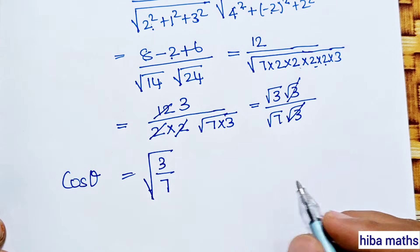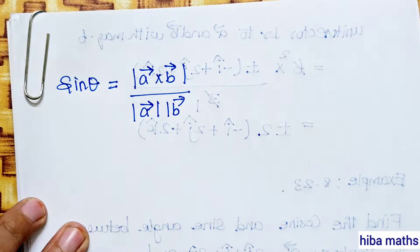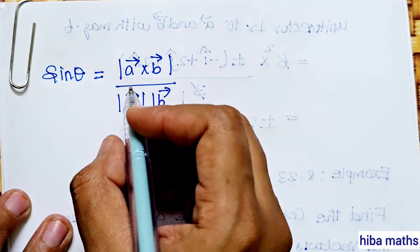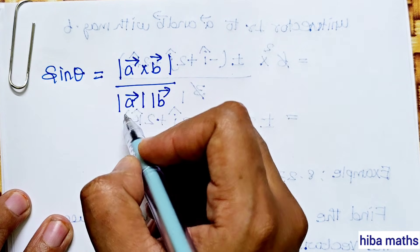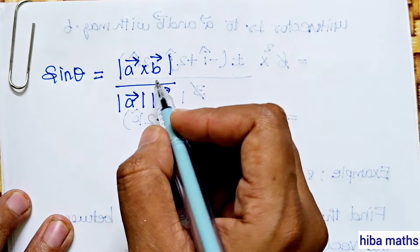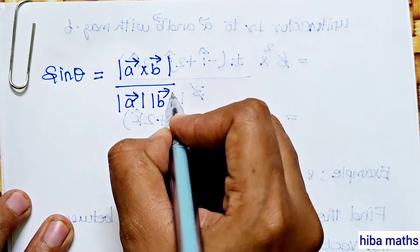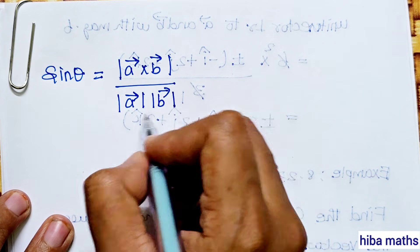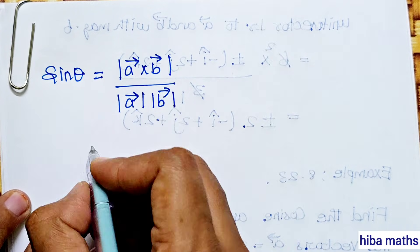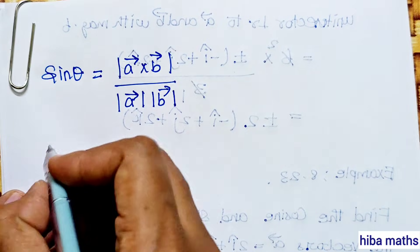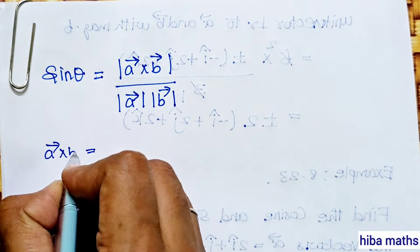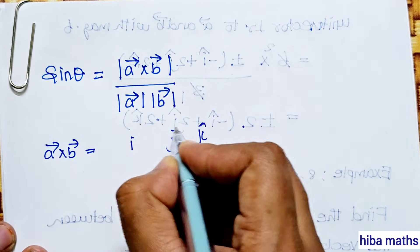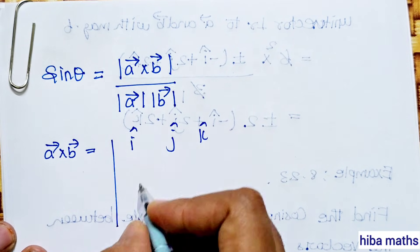Next, find sin theta. The value of sin theta is found using modulus of a vector cross b vector divided by modulus of a vector into modulus of b vector. The modulus of a vector and b vector are already found. So we need to find a vector cross b vector using matrix format.